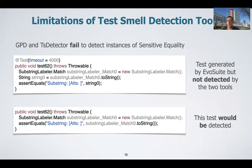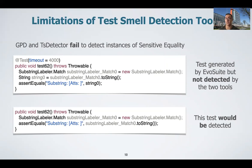We also found that the test smell detection tools are very easy to fool with small tricks. Consider, for example, sensitive equality. The sensitive equality smell occurs where the toString method is used as part of an assertion, as shown in the bottom example in this slide. However, EvoSuite creates assertions in a slightly different way: it does not use the toString method directly in the assertion but uses a second variable to store the result and then uses it inside the assertion. Incredibly, both test smell detection tools were not capable of detecting sensitive equality in this scenario, demonstrating that these tools are definitely not as accurate as previously reported.